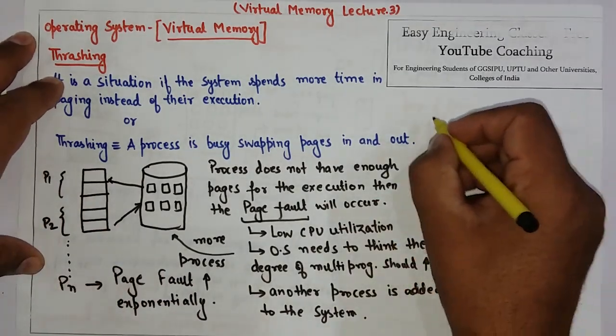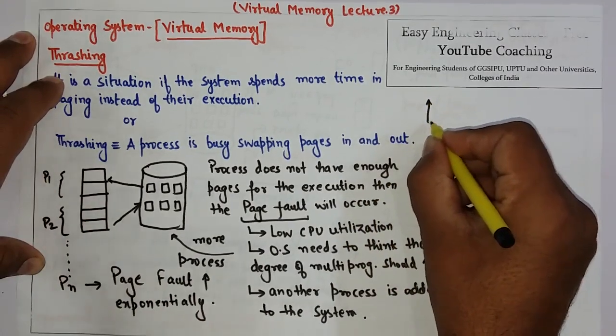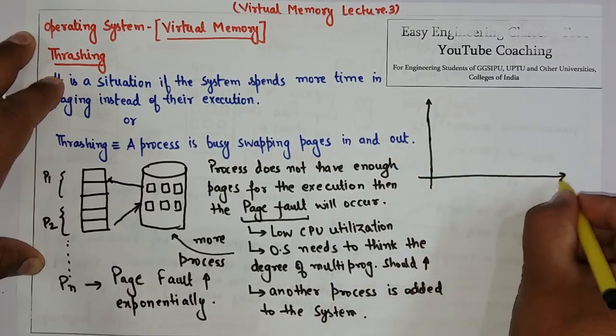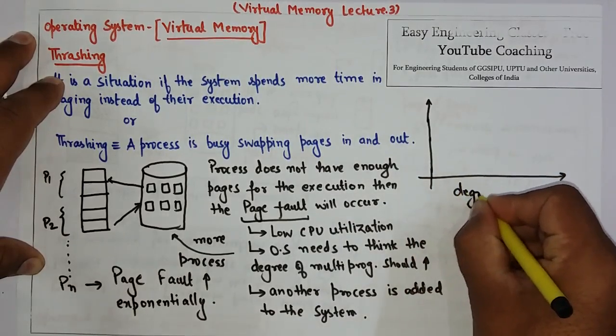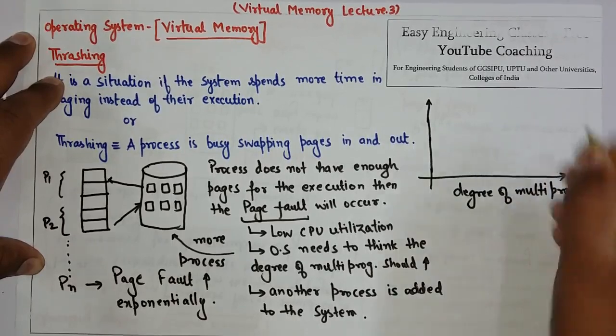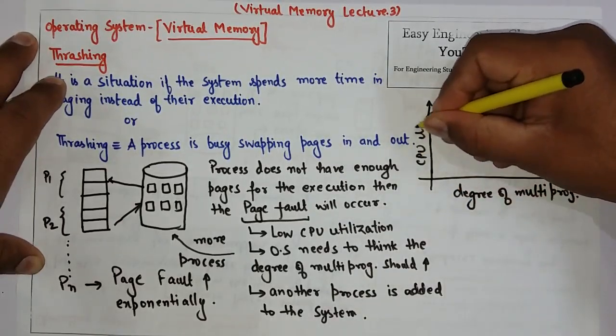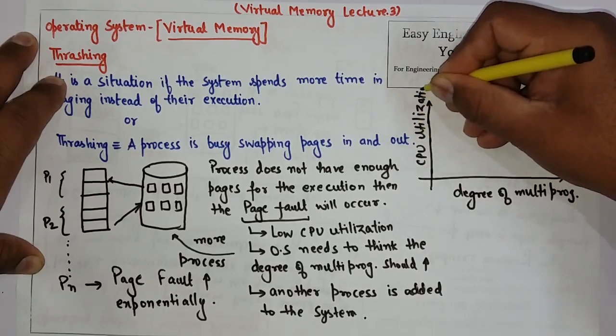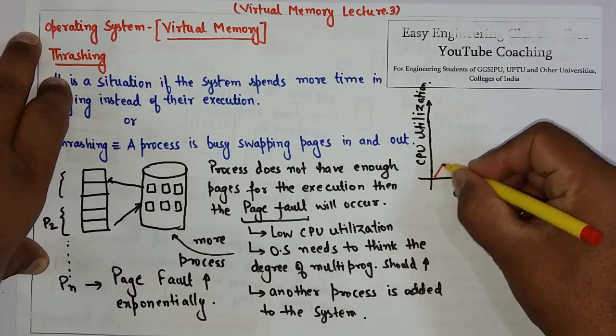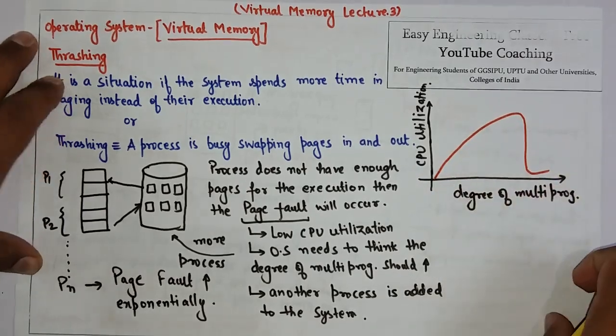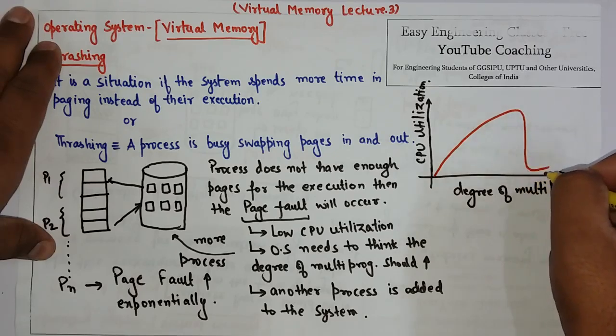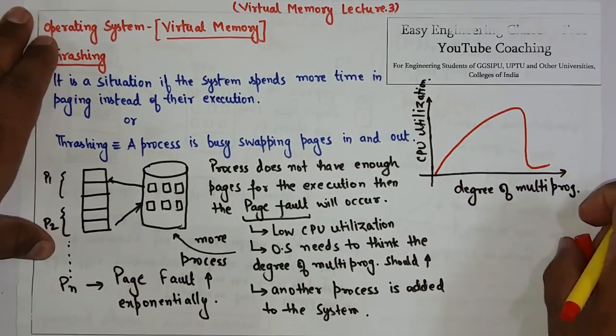So there is a graph of thrashing which is important. The graph is like that: here we have the degree of multiprogramming and here we have CPU utilization. There is a point when CPU utilization starts decreasing to almost zero when the degree of multiprogramming is increased.